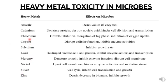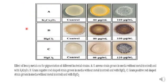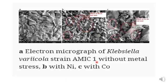Basically, heavy metals denature proteins, destroy nucleic acids, and sometimes inhibit growth or cause death to the bacterial cell. This picture shows the toxic effect of heavy metals on the pigmentation of different bacterial strains: the first is a strain of Staphylococcus aureus, the second is a gram-negative rod-shaped bacteria, and the third is a gram-positive rod-shaped bacteria. These are the controls grown in media without metal, compared to strains grown in media with metals. The electron micrograph of Klebsiella varicola strain AMIC1 shows the cell wall without metal stress versus cell walls under nickel and cobalt stress, causing roughness and deformation visible in the red circles.